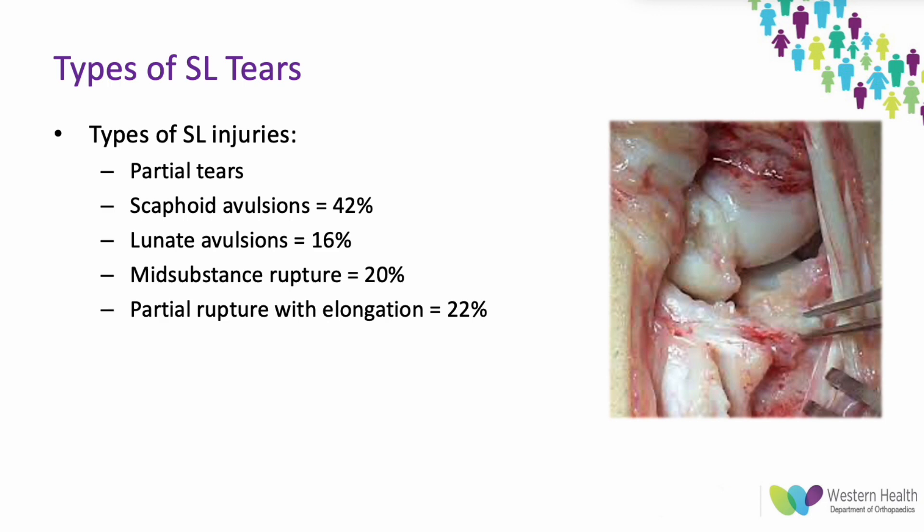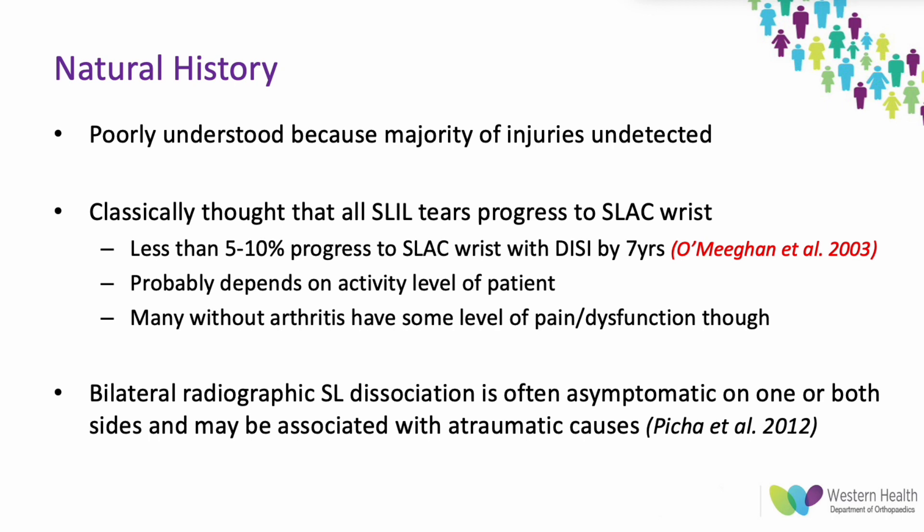The most common SL tear is an avulsion off the scaphoid side; mid-substance ruptures are relatively uncommon. Avulsion injuries are more likely to heal and are more suitable for acute transosseous or suture anchor repair. The natural history is poorly understood as most injuries go undetected. A 2003 study of 11 patients with arthroscopically confirmed full-thickness tears showed only 5 to 10% progressed to a SLAC wrist by seven years, with progression likely related to activity level.